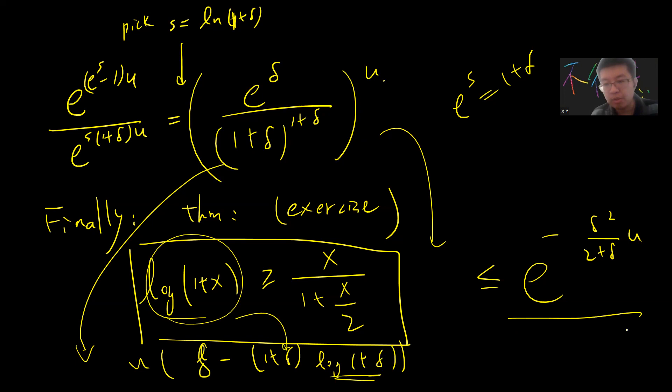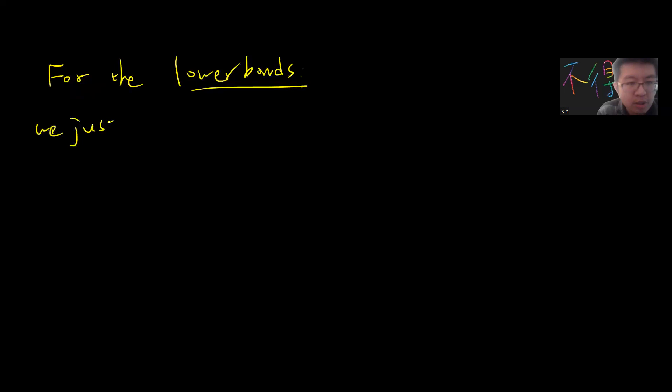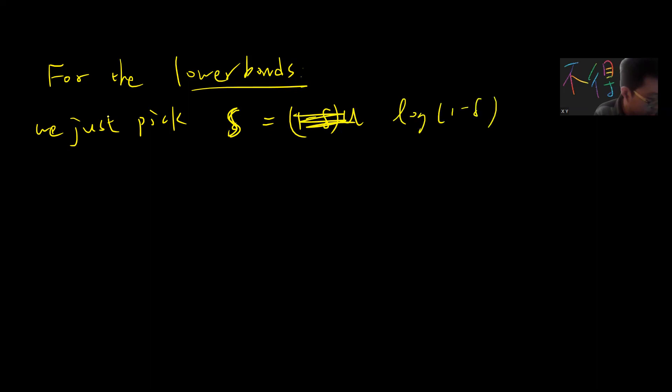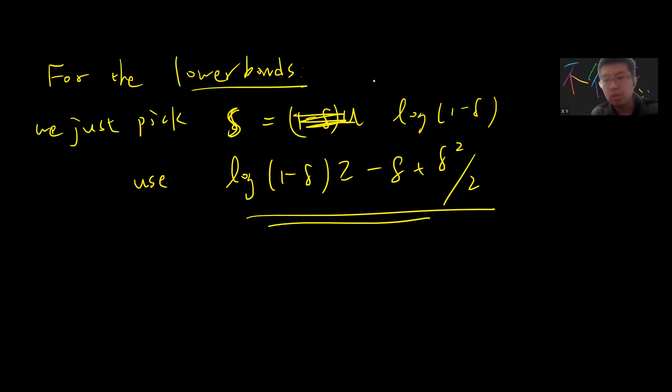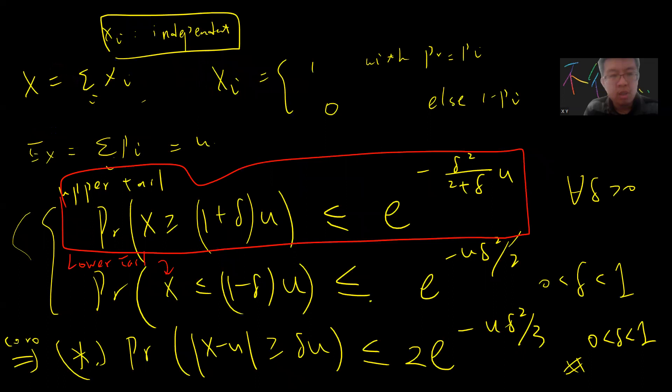This gives us the commonly used upper bound. For the lower bound, we do the same thing. For the lower bound, we pick s = log(1 − δ). We do the same computation and use the inequality log(1 − δ) ≥ −δ + δ²/2. Using the same techniques, you can prove the lower bound result.